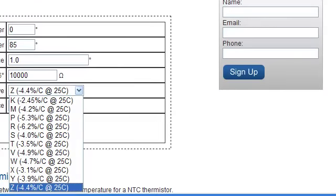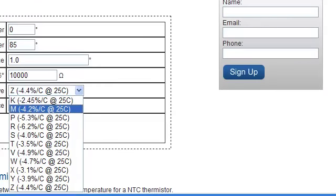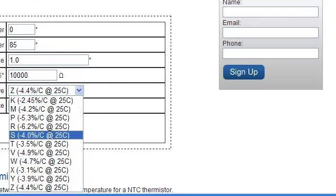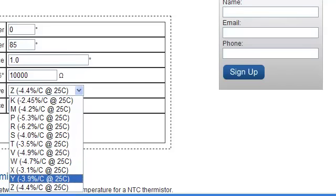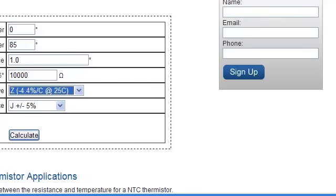Next, select the curve. You can choose the curve either by our curve letter designation or by the slope. For instance, minus 4.4 percent per degree C.